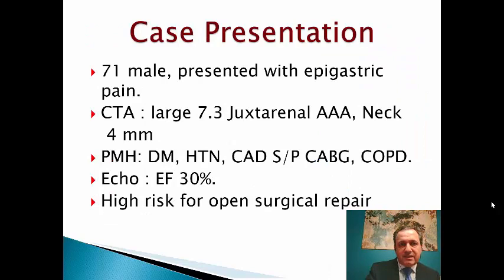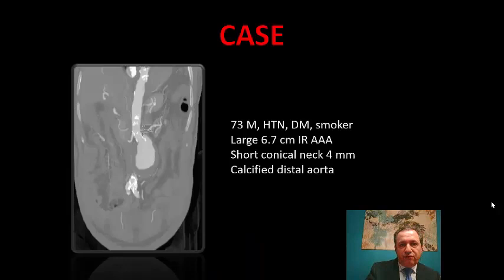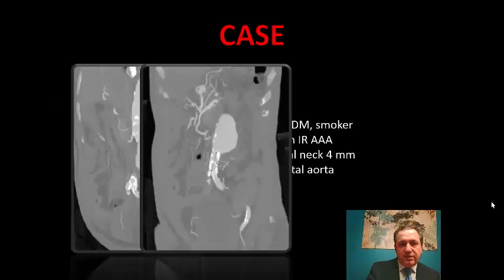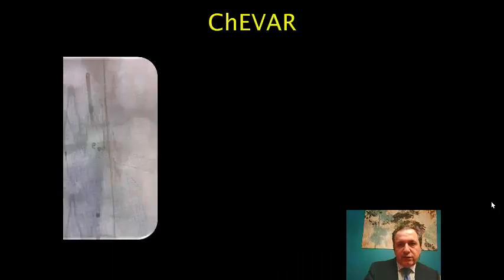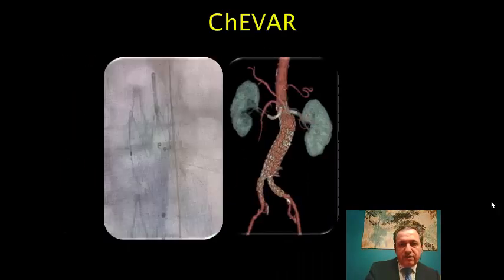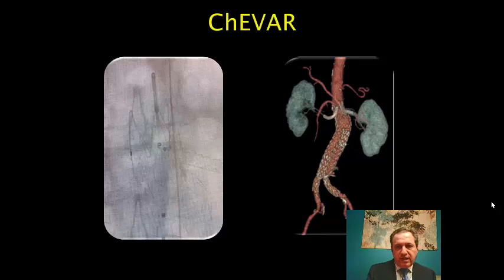Let me give you one of our cases — a 71-year-old who presented with a large juxtarenal aortic aneurysm with a 24 mm neck, as you can see here. Very short neck. He also had a calcified narrow distal aorta and a conical neck — so we had three challenges. We were able to treat it with chimney with good results, and at one-year follow-up there was no type 1 endoleak.